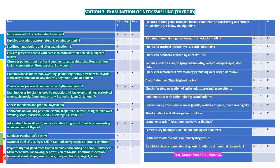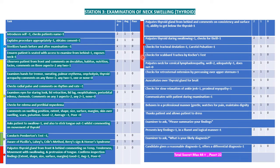Next, palpate the thyroid gland from the front and back, commenting on temperature, tenderness, movement on swallowing, and tongue protrusion. Then palpate from behind, looking for consistency, surface, and ability to get below the thyroid. Palpate during swallowing. Check for tracheal deviation, carotid pulse, and scabbard trachea by the Kocher test.